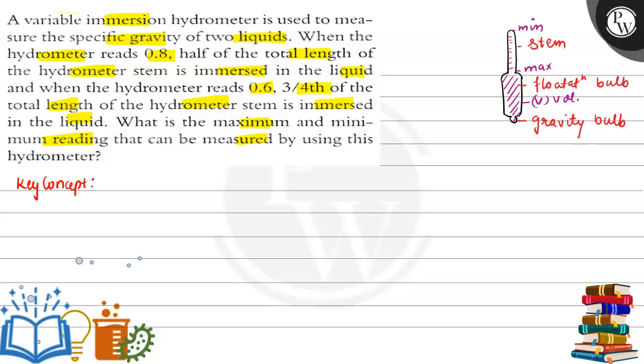We consider the length of stem as L and area of cross-section as A. We know that weight of liquid displaced is equal to weight of object which is submerged in water.